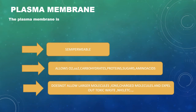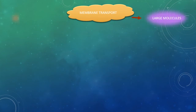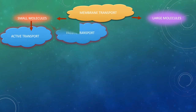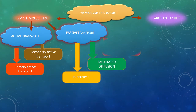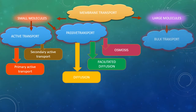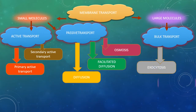In membrane transport there are two types of molecules: small molecules and larger molecules. Smaller molecules are transported by two means — active transport and passive transport. Active transport has two types: primary and secondary active transport. Passive transport has three types: simple diffusion, facilitated diffusion, and osmosis. To transport larger molecules, biomembranes use bulk transport, which includes exocytosis and endocytosis.